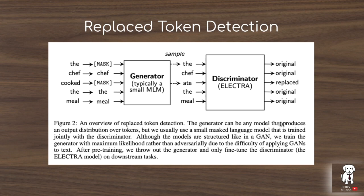It's also interesting because the generator provides challenging negative samples, since the generator is also trained on the masked language modeling task. So it does a pretty good job of replacing these masked tokens rather than just sampling randomly from the entire token vocabulary.